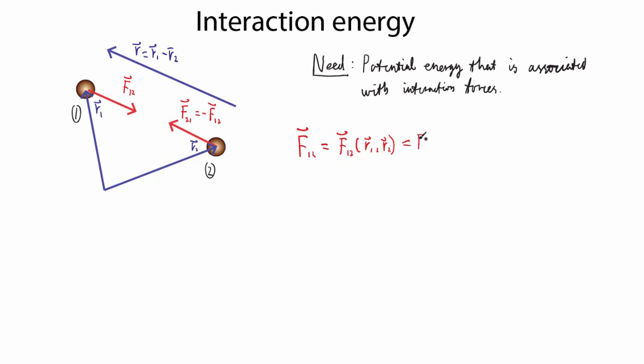So that way, it's different from the conservative forces we've been working with up to now, in that it depends on two positions instead of one. And we know, like I said before, that it's equal to minus F21.